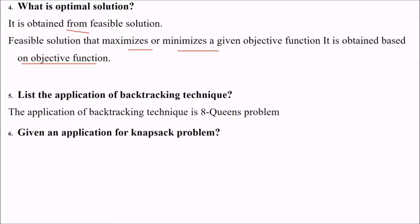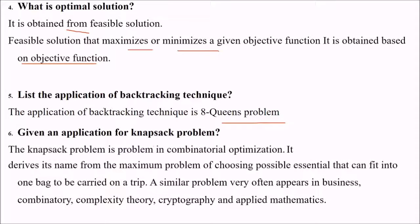Applications of backtracking: backtracking can be used to solve 8 queens problem. Application of knapsack problem: this is a combinatorial optimization technique. It derives its name from the problem of choosing possible essentials that can fit into one bag to be carried on a trip. This problem appears in business, combinatorics, complexity theory, cartography, and applied mathematics.